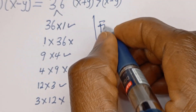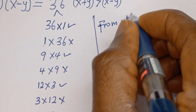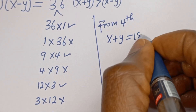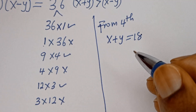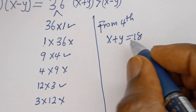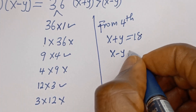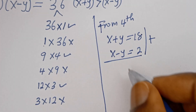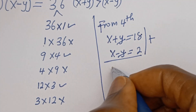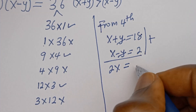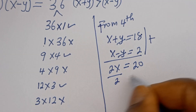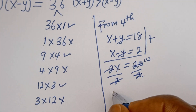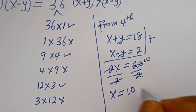Then from the fourth case: x plus y is equal to 18, and x minus y is equal to 2. Adding them together, 2x is equal to 20. Dividing by 2, x is equal to 10. This is a natural number.